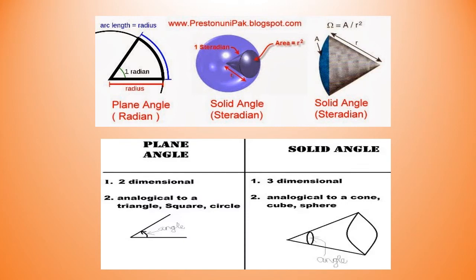The picture shows you the difference between plane angle and solid angle. Plane angle is formed by the intersection of two plane lines and solid angle is formed by two or more lines.